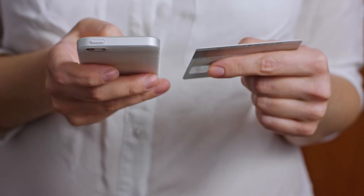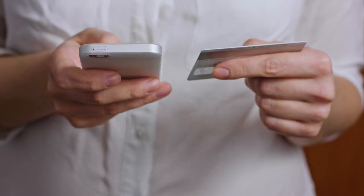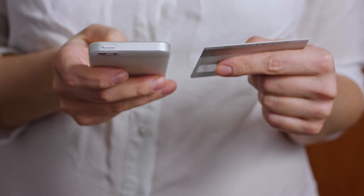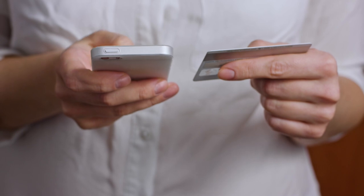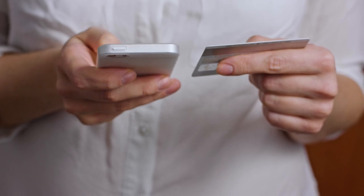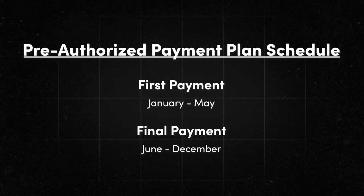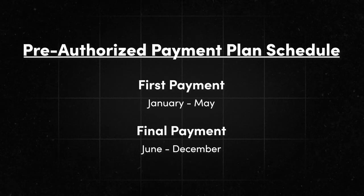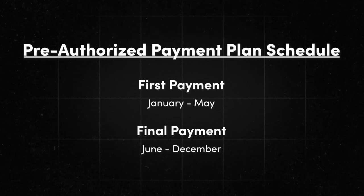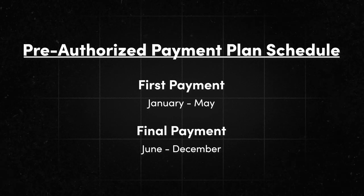For those residents who have opted into the pre-authorized payment plan, these letters are sent out twice a year: in late December with the January to May payments, and again in May with the final taxes due for June to December.